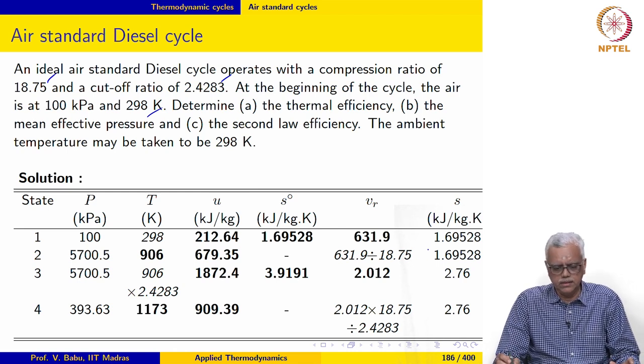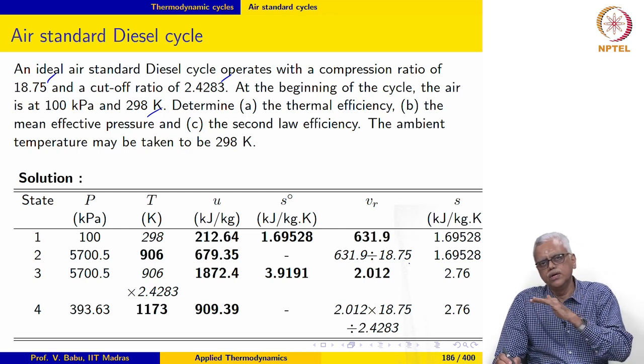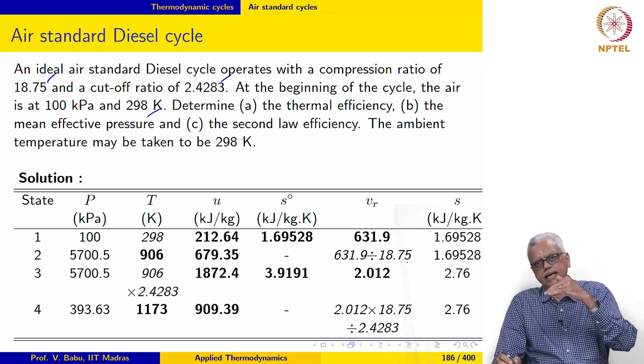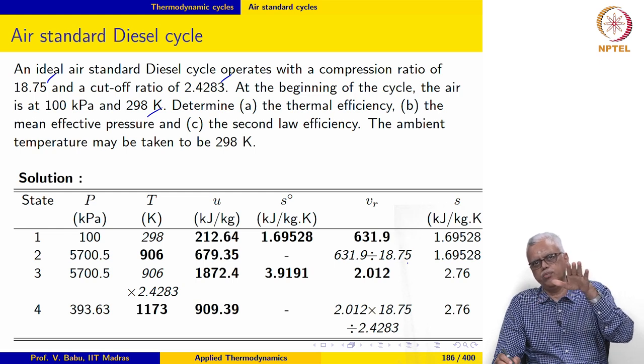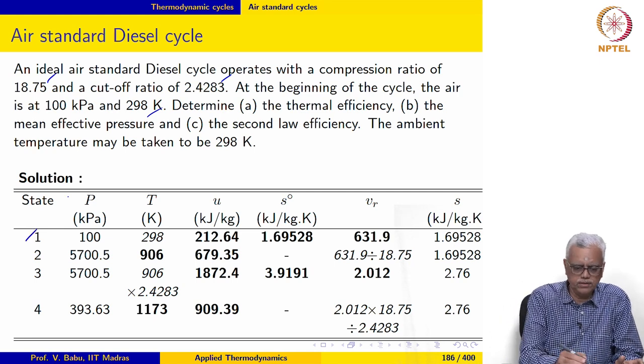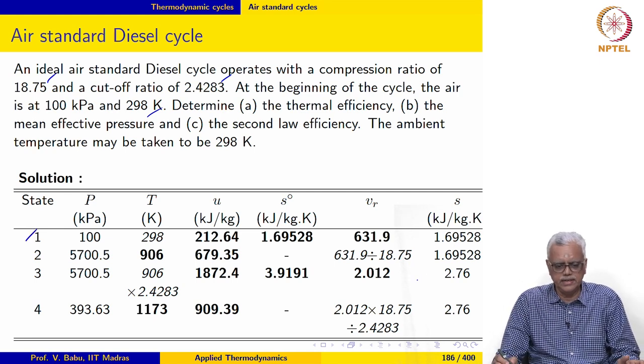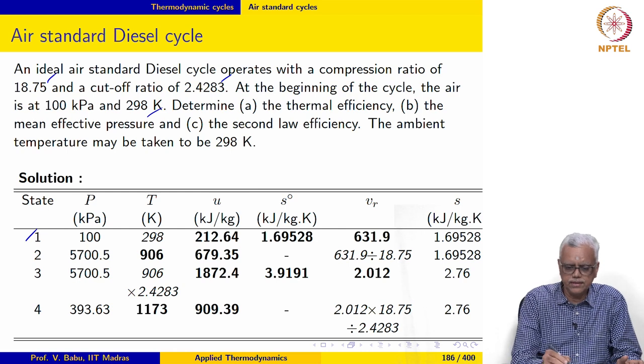In the same manner as what we did before, we will walk through the cycle and determine property values at each state point and then carry out the analysis. State 1 is the ambient or dead state, so this is easy to get.